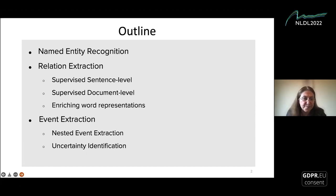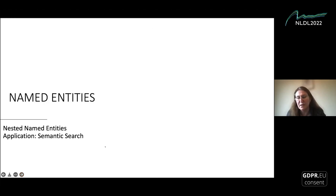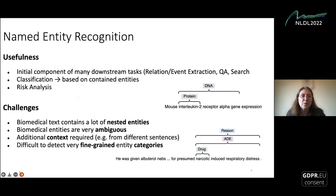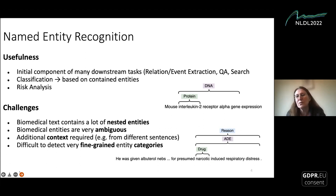I'll start with the first step of information extraction: named entities, including nested entities. The notion of nesting will be a key part of my talk. Named entities are a fundamental component of several downstream tasks — relation extraction, event extraction, and such. They can also be used for risk analysis and different types of classification based on contained entities.